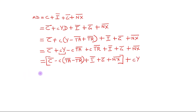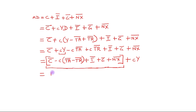You can notice that all the terms in the bracket — autonomous consumption, MPC·T̄A, MPC·T̄R, Ī, Ḡ, N̄X — are all autonomous or exogenous. So I will write them collectively as Ā, giving the final result: AD equals Ā plus MPC times Y.